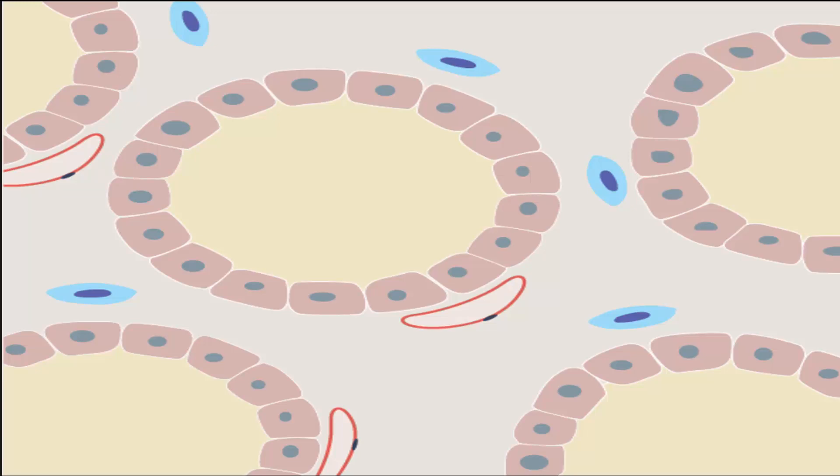First is the thyroid follicle. The walls of thyroid follicles are made up of follicular cells. Follicular cells are ultimately responsible for the production and secretion of thyroid hormones, discussed in the next video. The thyroid gland is highly vascularized.